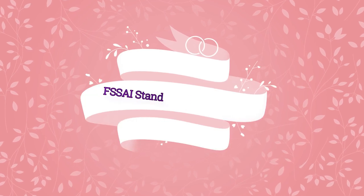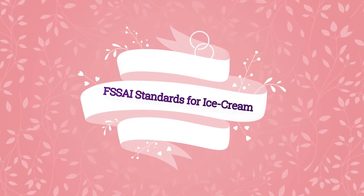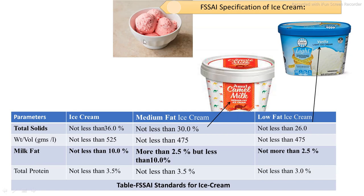The basic standards of ice cream are shown in a table with parameters corresponding to the types of ice cream. Ice creams are categorized into three groups: first, real ice cream; second, medium fat ice cream; and third, light or low fat ice cream. The main parameter is the milk fat percentage. If the fat content is more than 10%, it is called real ice cream. Medium fat ice cream has a fat content between 2.5% and 10%.